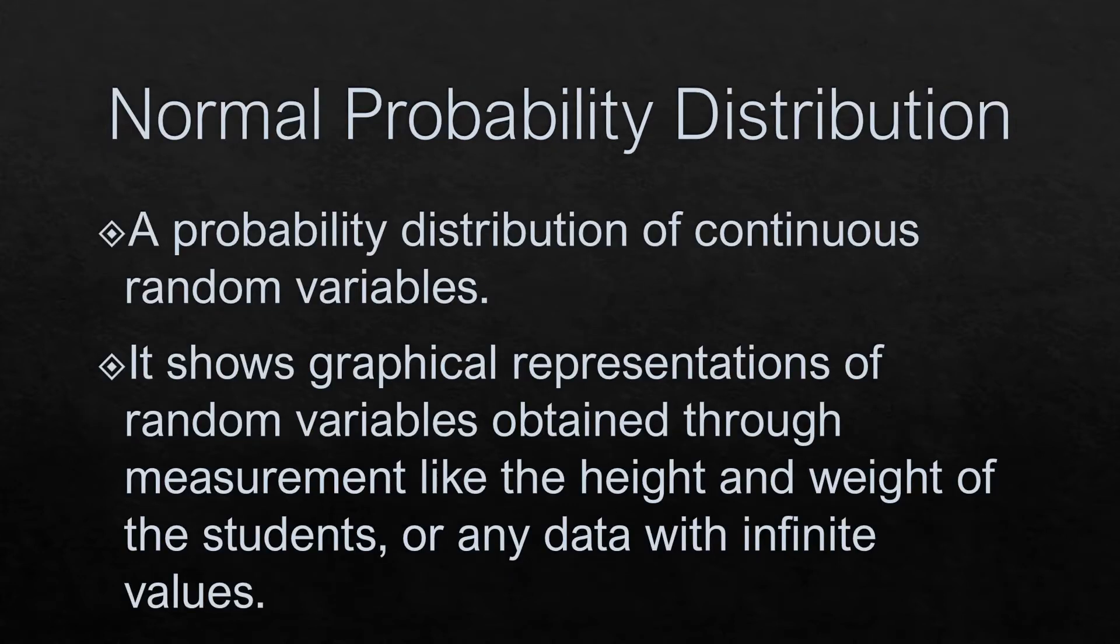The normal probability distribution is a probability distribution of continuous random variables. It shows graphical representations of random variables obtained through measurement, like the height and weight of the students or any data with infinite values.